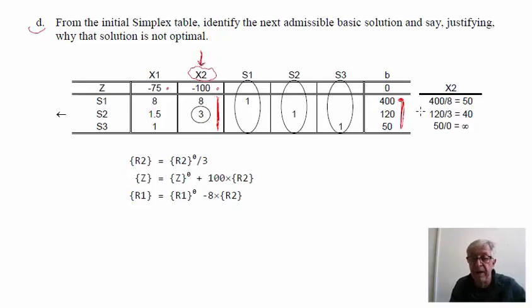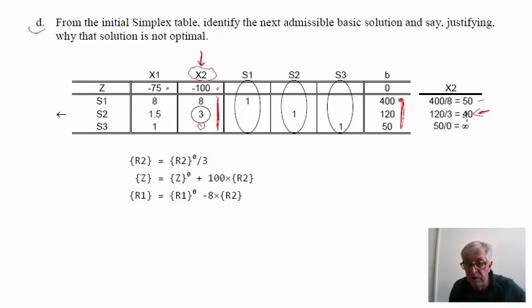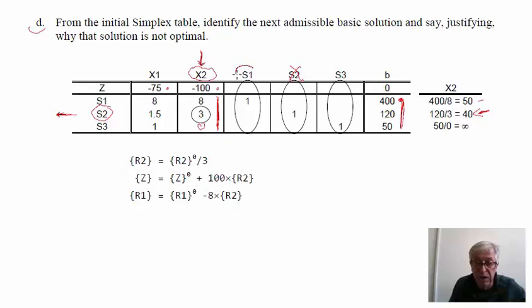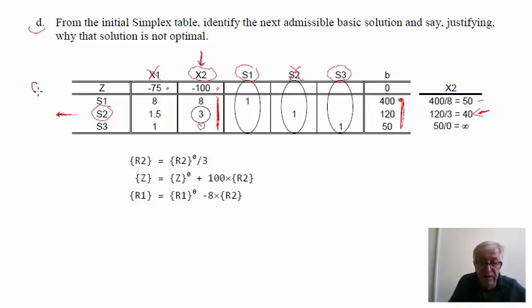We select the lowest ratio: x2 = 40, so s2 leaves the base. The next base will be s1, s3, and x2, with non-basic variables x1 and s2. To obtain the new table, the x2 column must become the unit vector (0, 1, 0). We first divide restriction 2 by 3 to get a coefficient of 1 for x2 in that row.